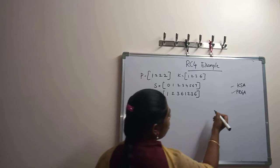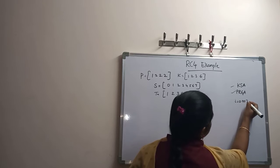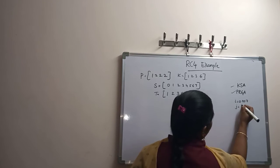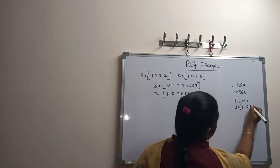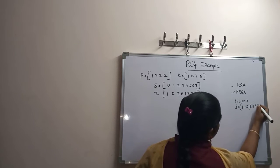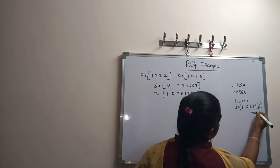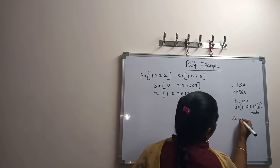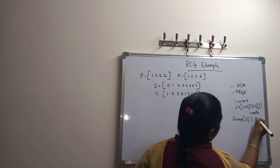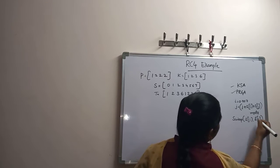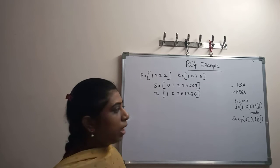In KSA, the code is: I goes from 0 to 7, J equals J plus S[I] plus S[J] mod 8, and then swap S[I] comma S[J]. Using this, we are going to do the process.